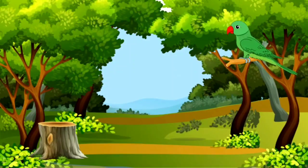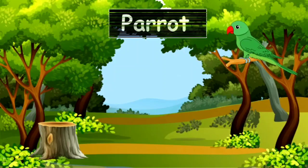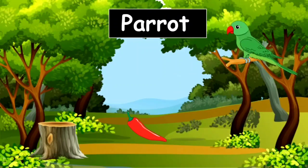Which bird is this? With a green colored body and a red beak — it's a very common bird. What's the name of this bird? It's parrot. And do you know what parrots are fond of? Parrots are fond of eating chillies. You can see a chilli here. Let us move on to the next bird.